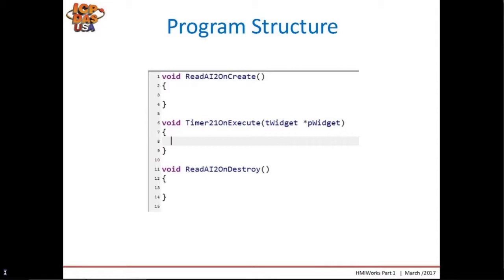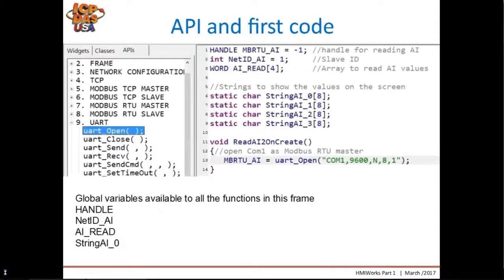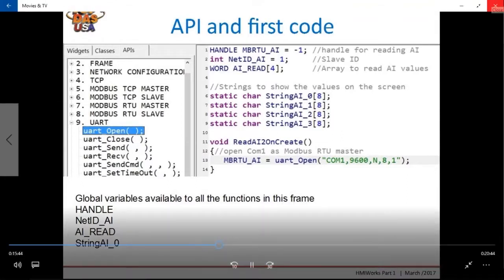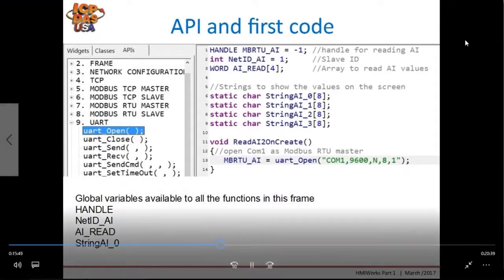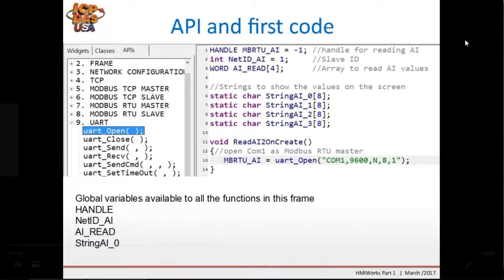In the code editor, we see the three event handlers that were automatically created: onCreate and onDestroy for the frame Read AI, and onExecute for the timer. Our job now is to put the required code in the event handlers to get the functionality that we need. To code for the touchpads in C language with HMI Works IDE, you will need to have the HMI Works API reference. The API PDF can be downloaded from our site.